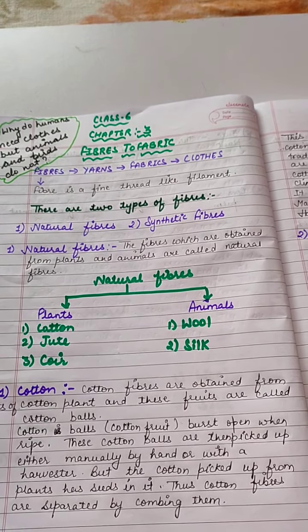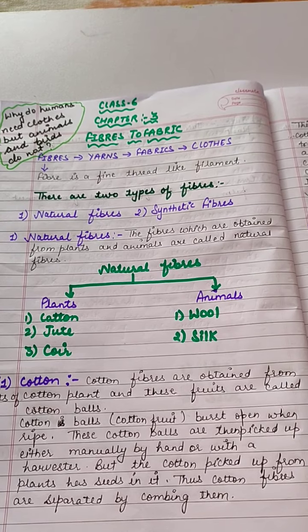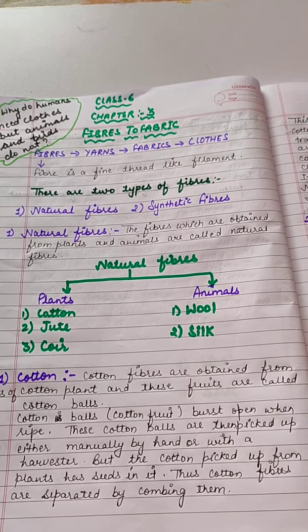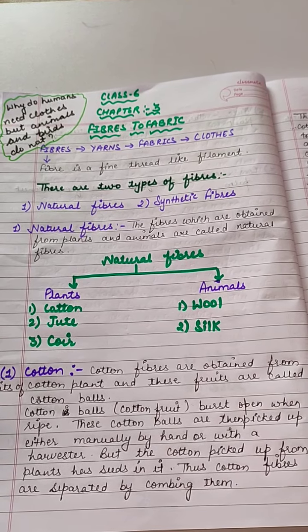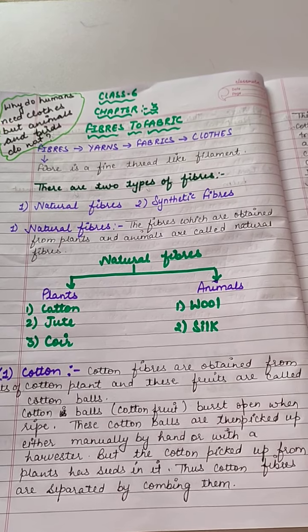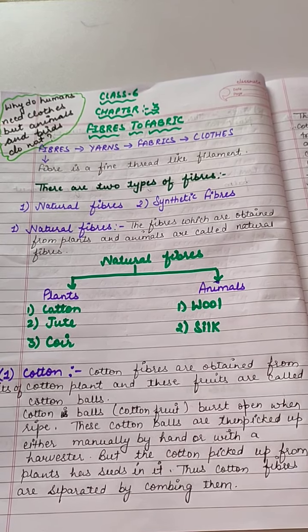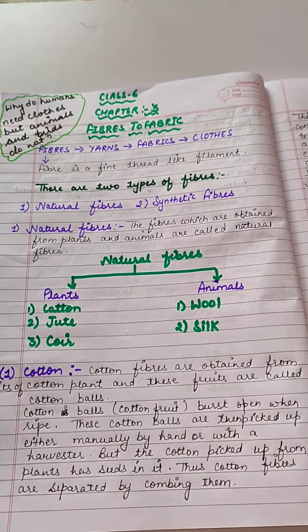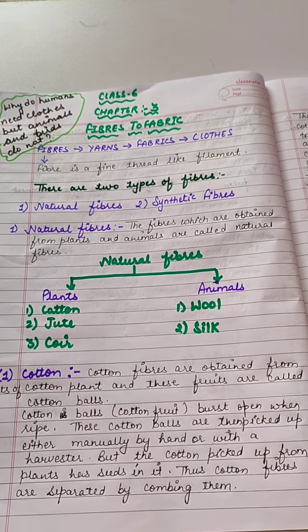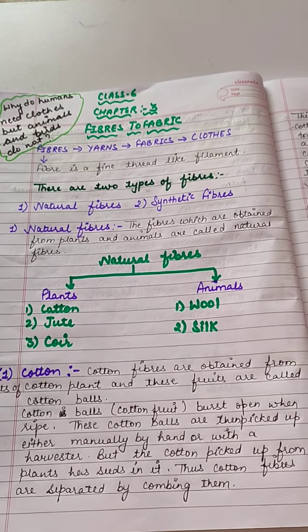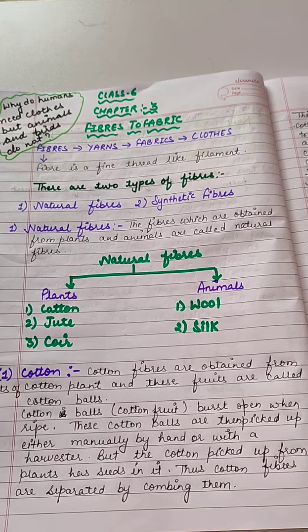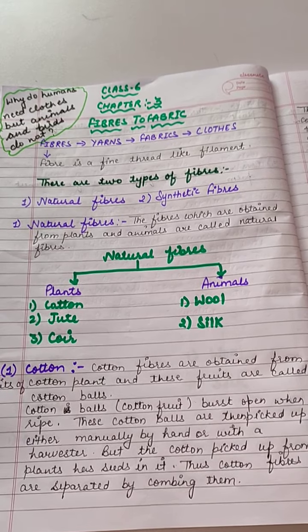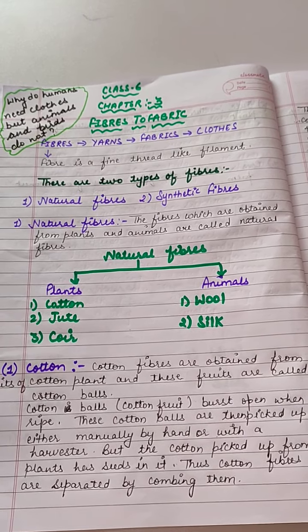The answer is very simple. Animals like dog, cat, sheep, goat, etc. have fur on their body which protects them from heat, rain, cold, and insects. And birds have feathers on their body, and these feathers protect them from the sun's heat, from the rain, from the cold, and from insects also.